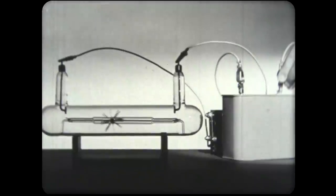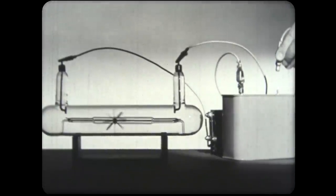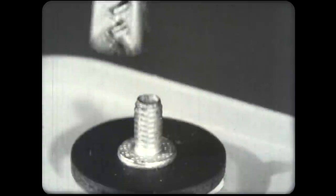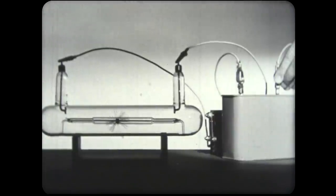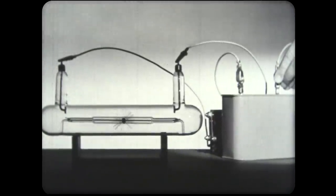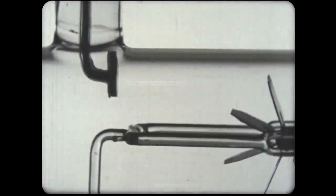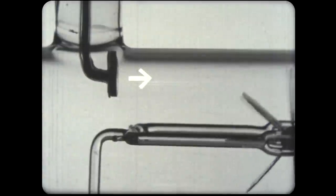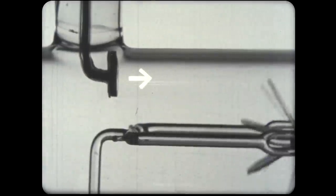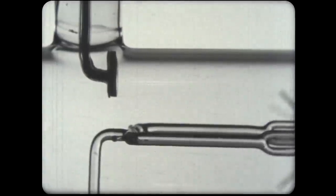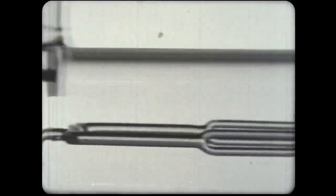If we disconnect the power supply that makes the electrons move, the wheel stops turning. Electrons flow away from here. As they move through the tube, they hit against the blades of the wheel. You can't see the electrons, but you can see the effect they have on the wheel.